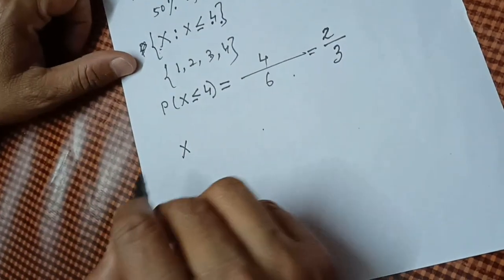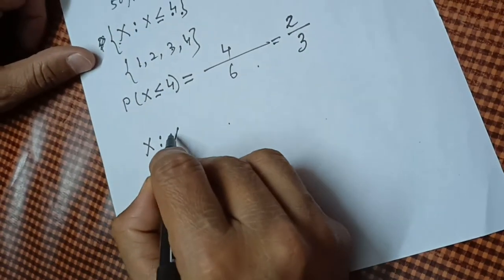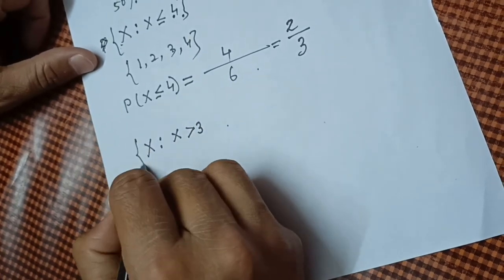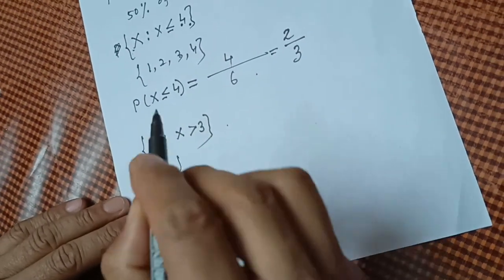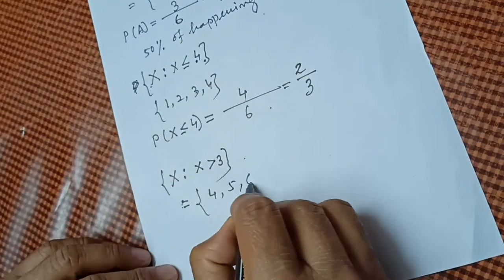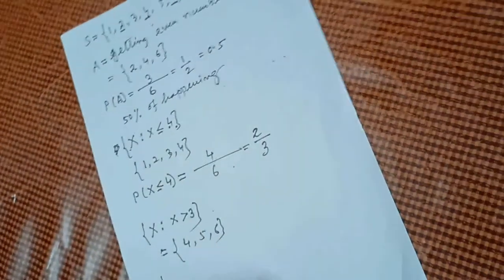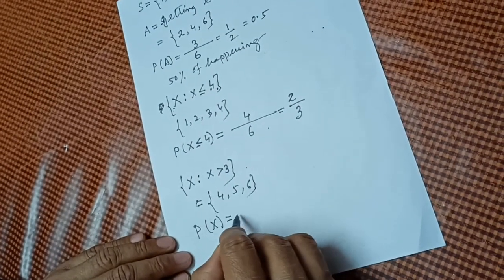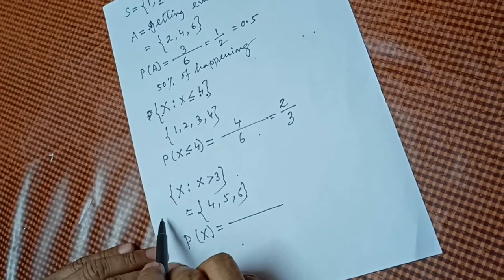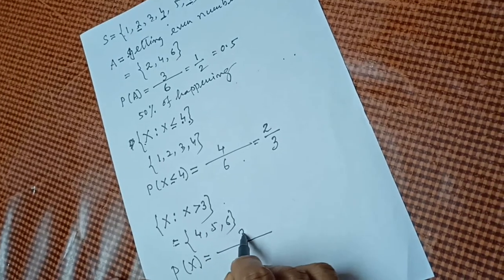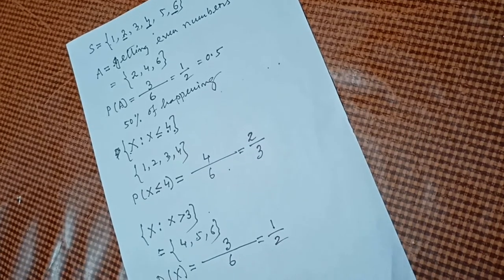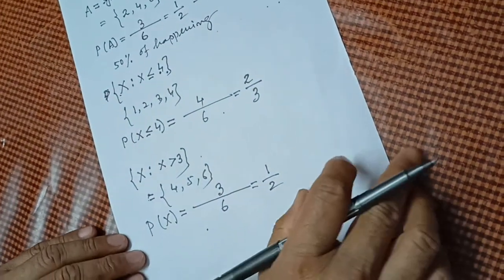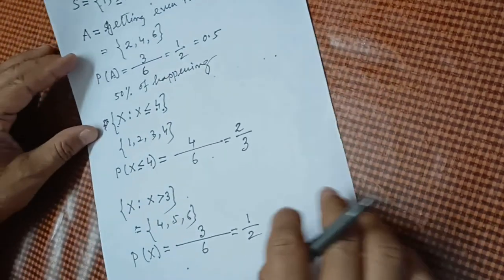Similarly, if we consider another event X = {X : X > 3}, this will contain {4, 5, 6}. Then the probability of this event is: number of elements in X is 3, divided by 6, which equals 1/2. In this way we can calculate the probability of different events.